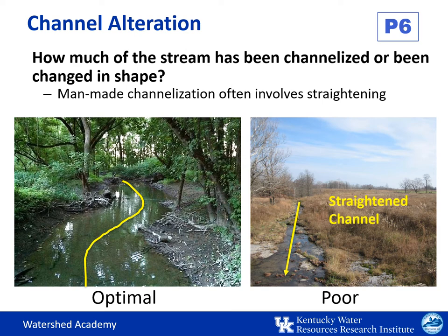To adequately assess your stream habitat, beginning with this parameter and through parameter 10, you'll include an additional 100-meter upstream segment from where you've originally started. Channel alteration refers to how much human activities have straightened or channelized the stream. This can include artificial embankments, riprap, and other forms of bank stabilization structures, significant stretches of straightened stream, dams and bridges obstructing flow, and other evidence of dredging or substrate mining such as gravel, sand, and silt. The optimal stream has much more sinuosity or bend compared to a straightened one.